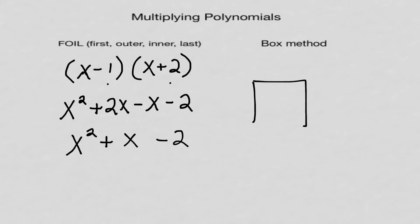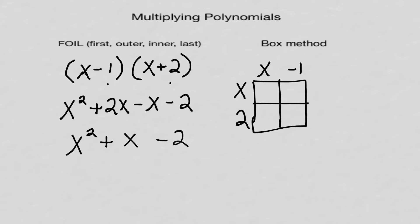Here's the box method. I make a 2-by-2 box. I put x minus 1 along the top — there's my x, there's my minus 1 — and x and positive 2 along the side. Now I multiply in order. The upper left-hand quadrant is x times x, and I hope by now this is automatic: that's x squared.